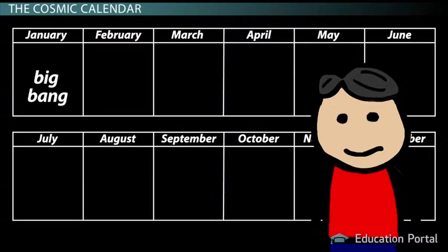We'll pretend that the Big Bang occurred on January 1st of this year, and then slowly go from there to determine what happened and when.